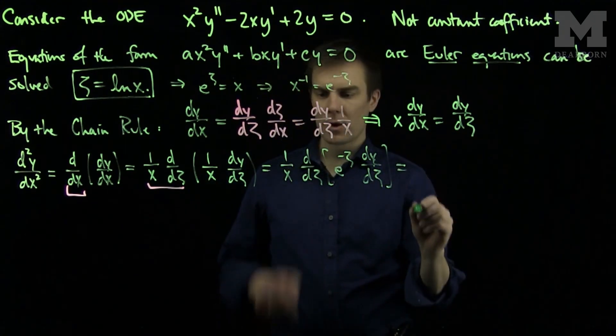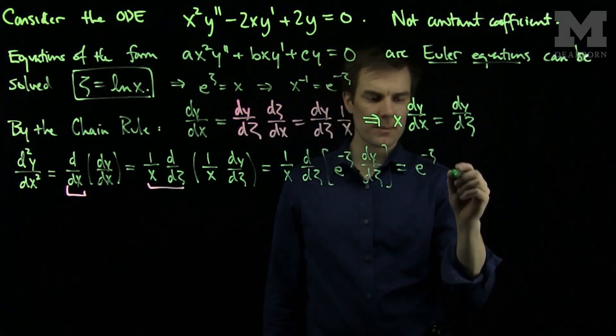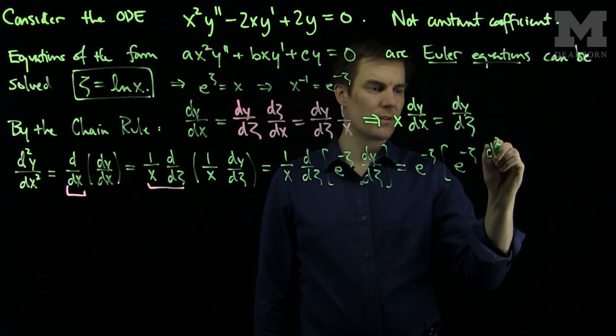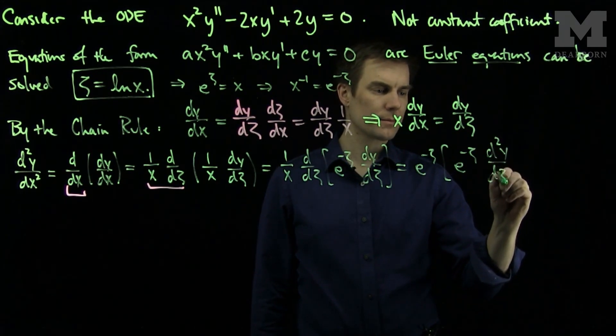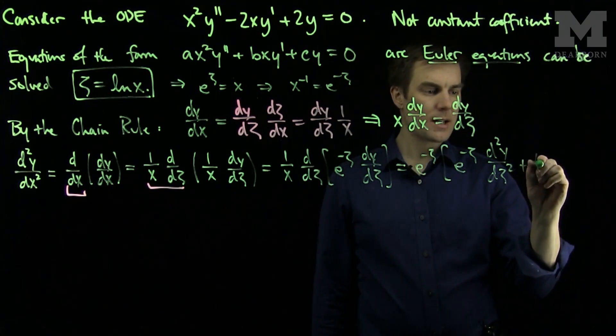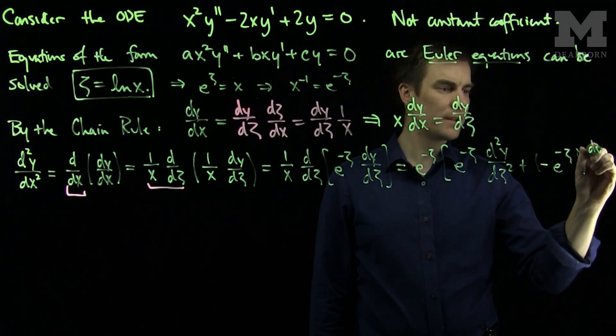And now we need to do the product rule. So I have a 1 over x over here. I can replace that with an e to the negative zeta by the same reasoning. And then I have the first function times the derivative of the second function plus the second function times the derivative of the first. So this will be a negative e to the negative zeta dy d zeta.